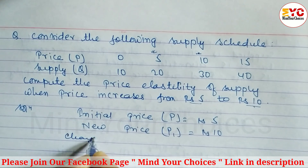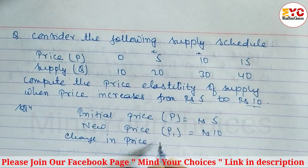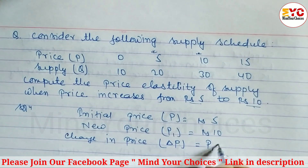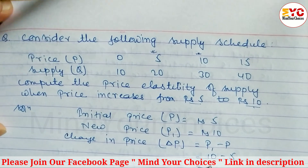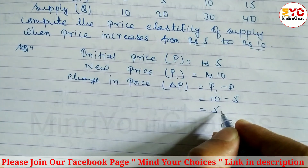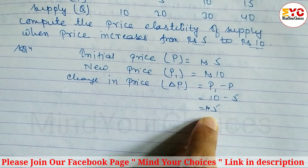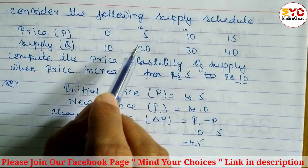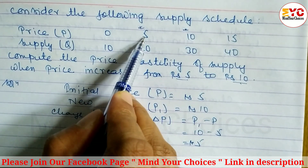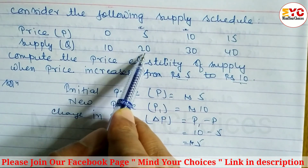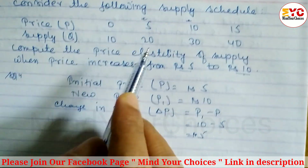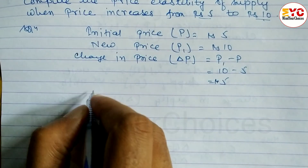Now we have to find the change in price, denoted by ΔP, which equals P1 minus P. So ΔP = 10 minus 5 = rupees 5. When the price is rupees 5, the initial quantity supplied Q is equal to 20 units.